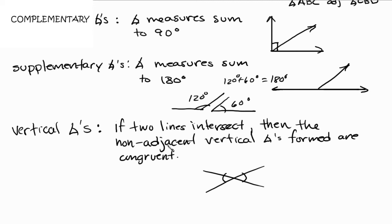I'm including 'non-adjacent' because it's important to know that vertical angles are never going to be adjacent to each other. For example, angle one and angle two that are adjacent are NOT vertical angles. Instead, angle one and the angle across from it are vertical angles, and they are congruent to each other, meaning they have the exact same measure.